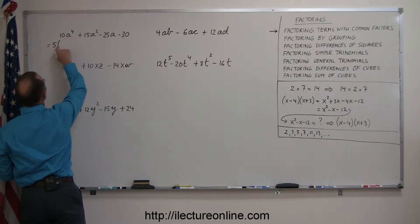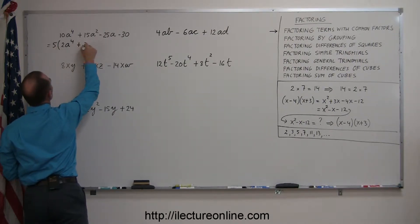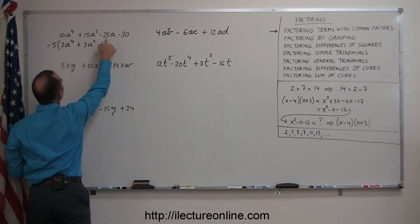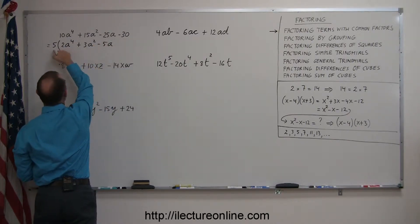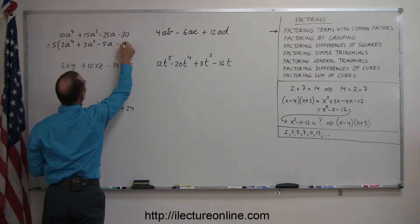So I can write this as equal to five times. Now, 10 divided by five is 2, so I'll write 2a to the fourth. 15 divided by five is 3, so I'll write plus 3a squared. 25 divided by 5 is 5, so I'll write minus 5a. And 30 divided by 5 is 6, so I'll write minus 6.